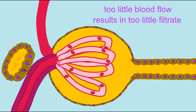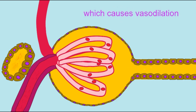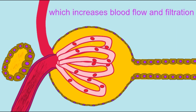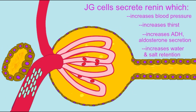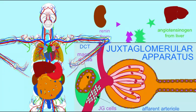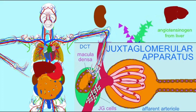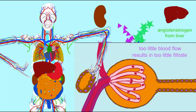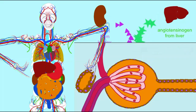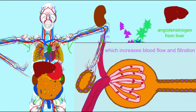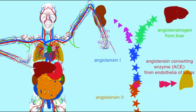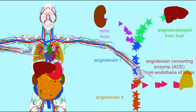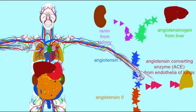ACE2 is part of the renin-angiotensin system, which is the main way of regulating blood pressure in the body. When the kidneys detect that there is not enough blood pressure to make significant amounts of urine, the hormone renin is released. Renin then acts on angiotensinogen, a protein made in the liver, to produce angiotensin-1. Angiotensin-1 circulates in plasma until reaching the lungs, where the endothelia of the lungs produce the angiotensin-converting enzyme, a protease that converts angiotensin-1 into angiotensin-2.